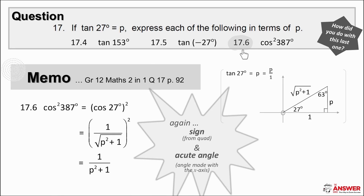17.6 is a bit more complicated, but still we follow the same process. Simplify it first by reducing it to a ratio of an acute angle. 387 degrees is an angle greater than a full revolution, and takes you into the first quadrant, making an acute angle of 27 degrees with the x-axis. Cos is positive in the first quadrant, so inside the bracket this reduces to cos 27. Then the whole thing is squared. We already found cos of 27 earlier in the question, and so its square is 1 over p squared plus 1.